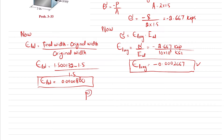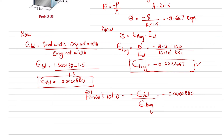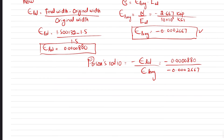Applying the Poisson's ratio formula: ν = −lateral strain / longitudinal strain = −0.000088 / (−0.0002667). This gives a Poisson's ratio of approximately 0.330. That is the answer to the first part.